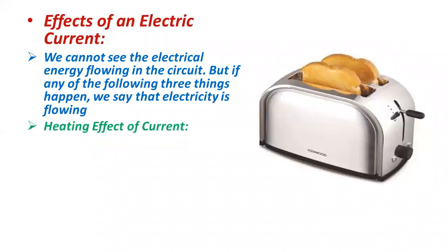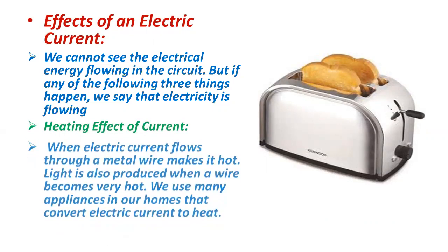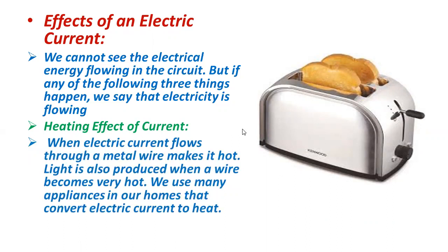The first one is the heating effect of current. When electric current flows through a metallic wire, it makes it hot. Light is also produced when a wire becomes very hot. We use many appliances in our homes that convert electric current to heat. One example is a toaster, and the second example is an iron, where electrical energy is converted into heat and that heat is utilized to press our clothes.